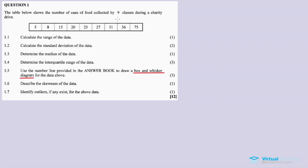It's a data set arranged in ascending order from smallest to biggest. So 1.1, calculate the range of the data. The range, you subtract the maximum with the minimum. So it's going to be 75 minus 5. Our answer is equal to 70.